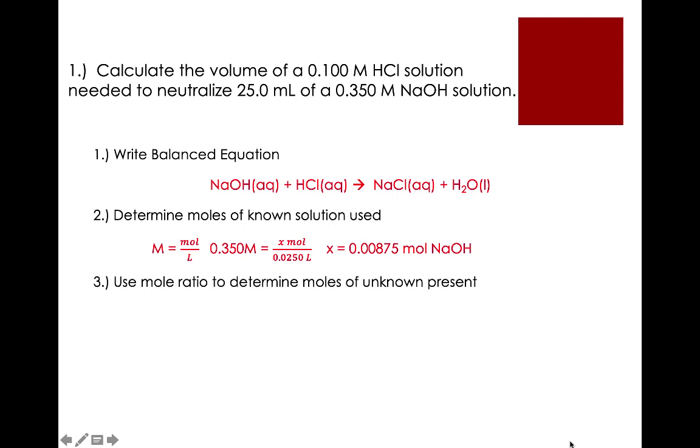From there, I can use the mole ratio from the balanced equation to determine the number of moles of unknown present, in this case the HCl. Since I have a ratio of 1 mole of NaOH for every 1 mole of HCl, in order to completely neutralize 0.00875 moles of NaOH, I'll need to add 0.00875 moles of HCl.